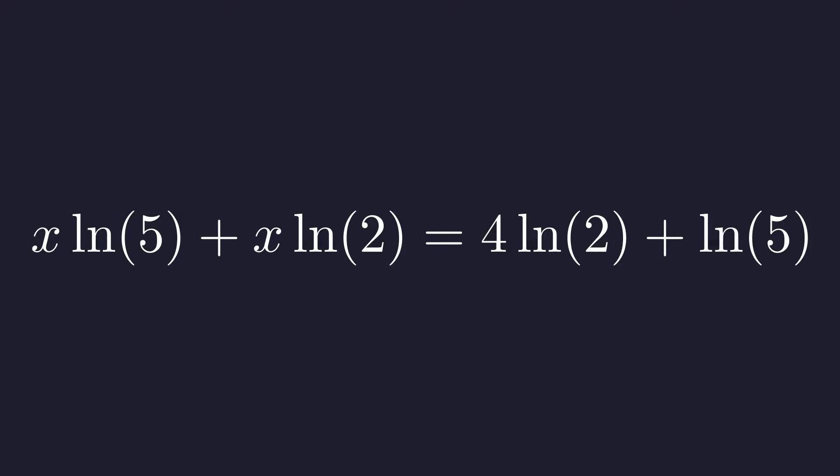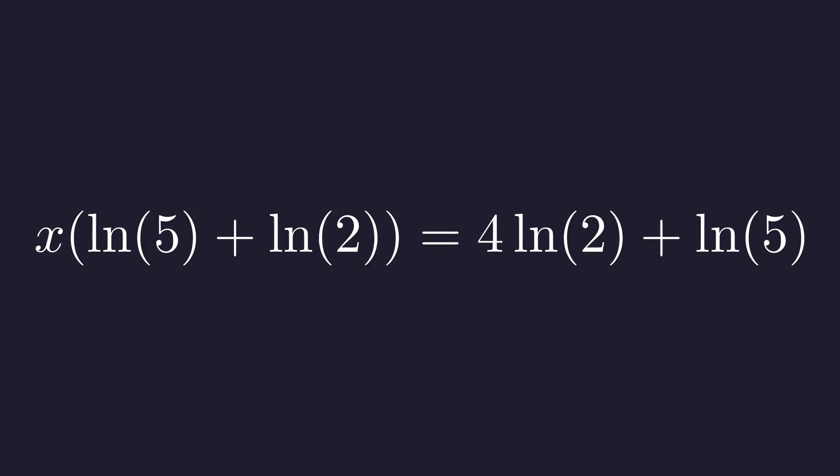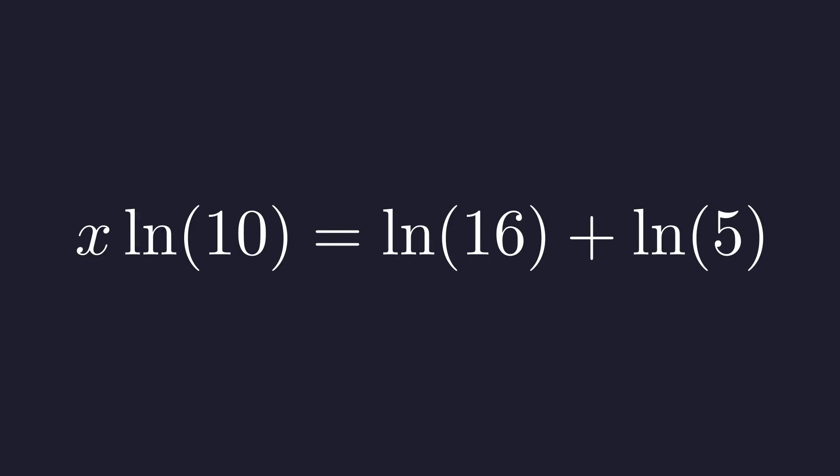Next, we group all x terms on the left and constant terms on the right. We factor out x on the left-hand side. Using logarithm properties, natural log of 5 plus natural log of 2 is natural log of 10. And 4 times natural log of 2 is natural log of 16.